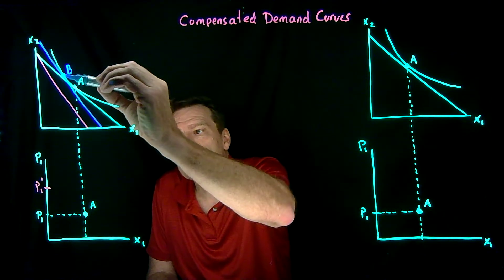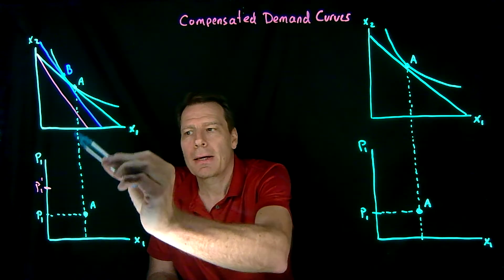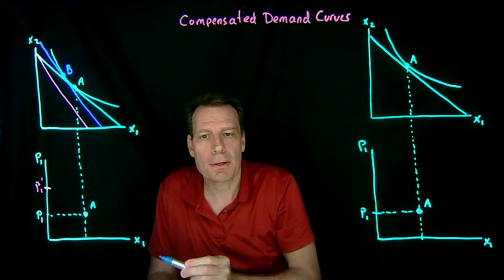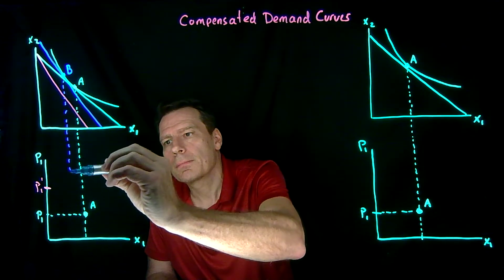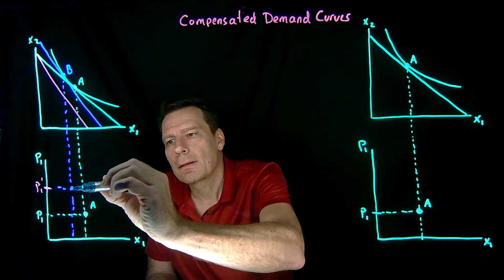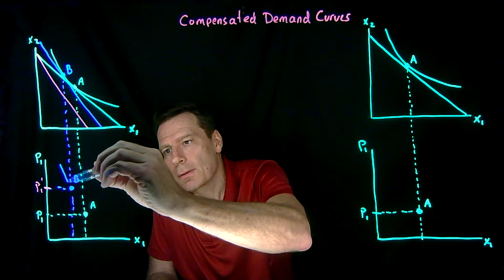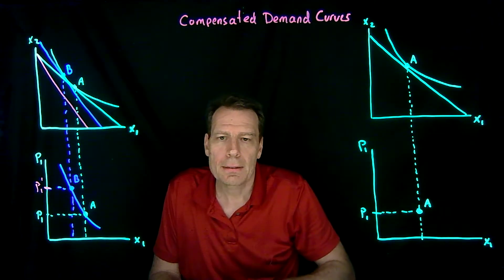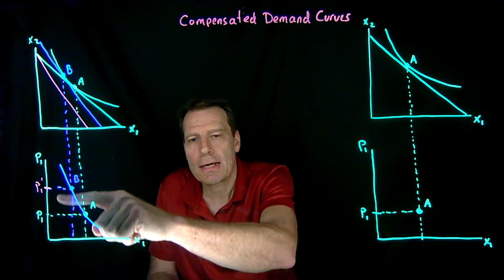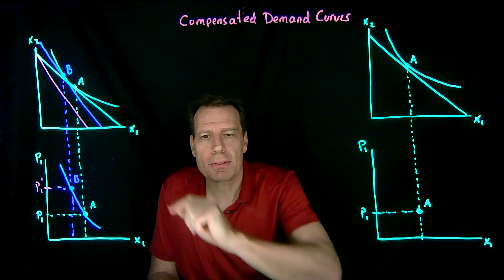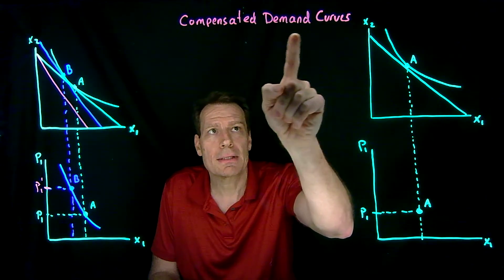We could also bring down point B. Point B happens at that same price — it has the same budget line slope as the magenta slope, since they are parallel lines — so we can bring point B to the lower picture as well. Connecting points A and B on the lower picture gives us another curve, which tells us how much of x1 we'll consume as the price changes, assuming we get compensated for the price change. This is called a compensated demand curve.